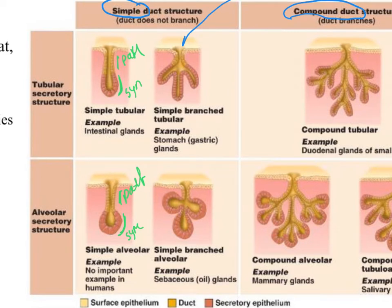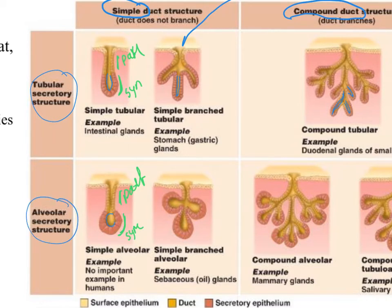The tubular secretory structure follows a tube-like pattern — it's narrow. The alveolar secretory structure, in contrast, has a more rounded basin where it's collecting the initial secretion of the product, whether it's mucus or sebum or milk or whatever. So that is another structural difference.